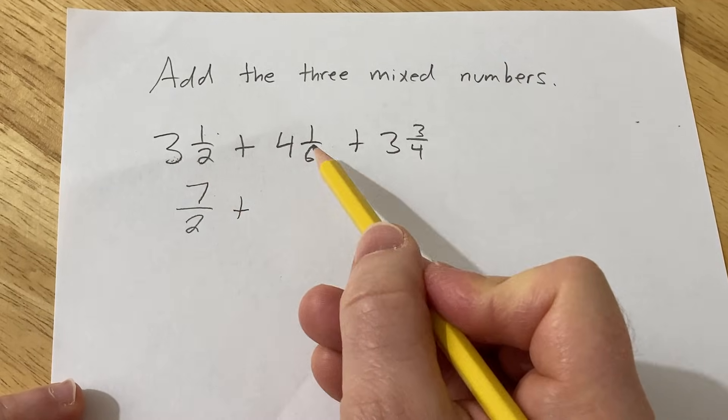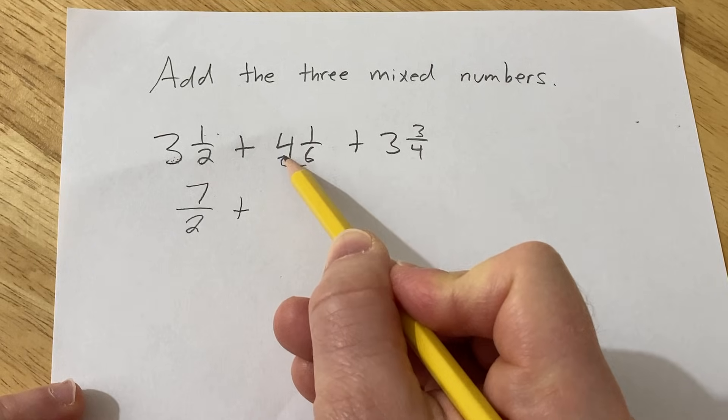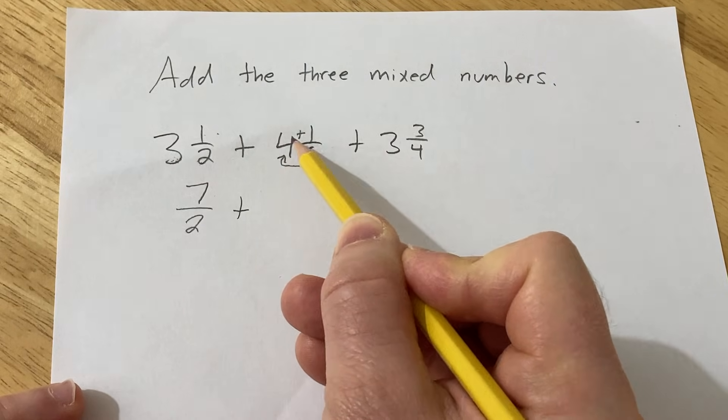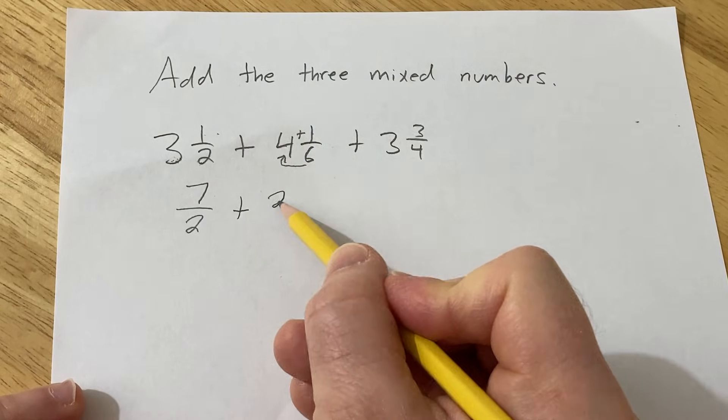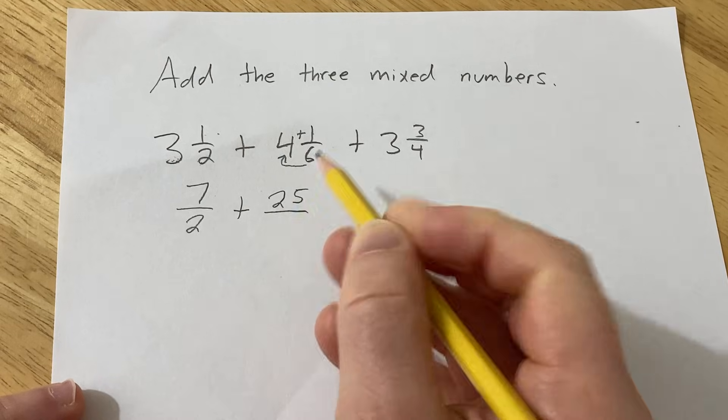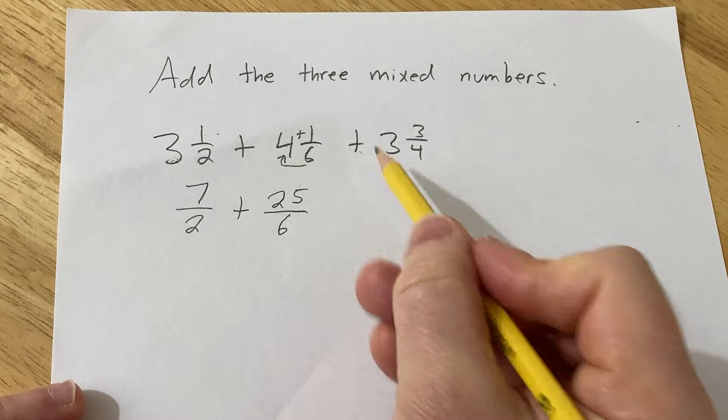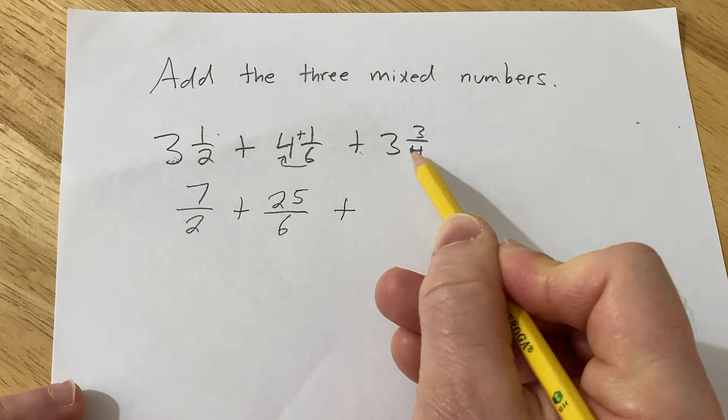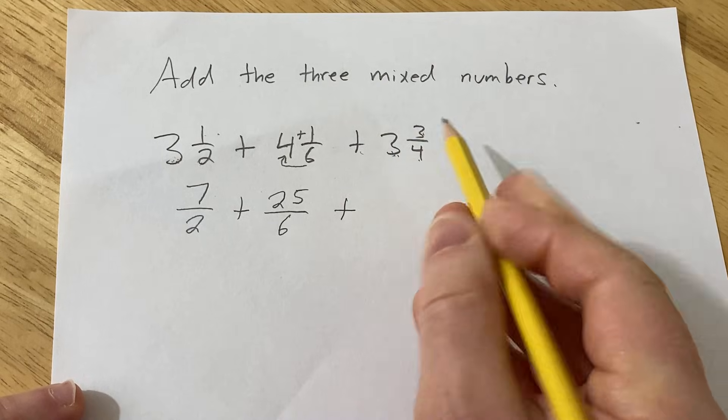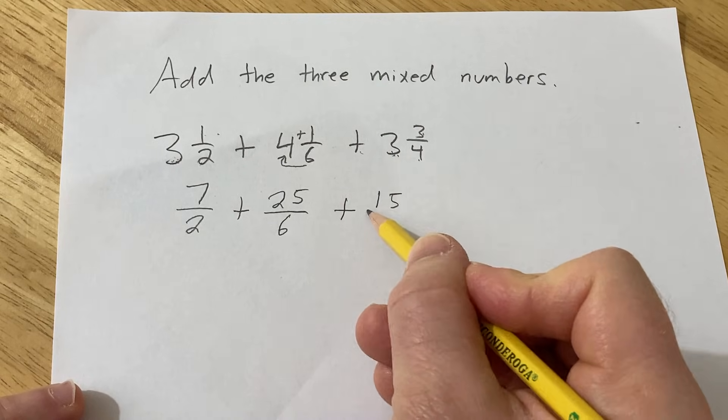So you bring that one down. Same thing here, 6 times 4 is 24, and then you add 24 plus 1 is 25. So you get 25 over 6. Bring down the plus. 4 times 3 is 12, 12 plus 3 is 15, so you get 15 over 4.